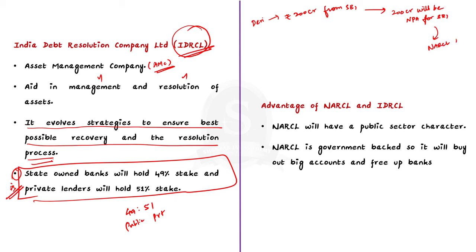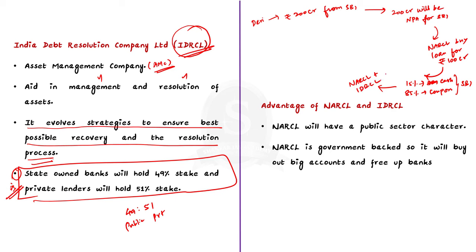NARCL will negotiate with SBI and buy the 200 crore asset for Rs. 100 crores. NARCL will pay 15% of the agreed price, that is 15 crores in cash, and the remaining 85% — that is 85 crores — in the form of security receipts. Then NARCL will take the help of IDRCL, which will use its expertise to manage and maximize the value of the asset. Once this is done, NARCL will try to sell it to other prospective buyers for profit. Say it finds a new buyer Ms. Rani and sells the asset for 120 crores. NARCL will then pay the balance 85 crores to SBI, pay a consulting fee to IDRCL, and also make a profit since the asset was sold at Rs. 120 crores.